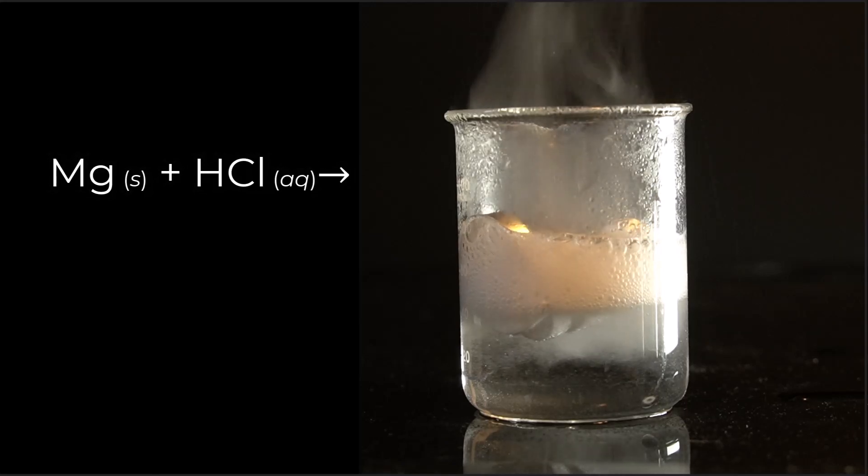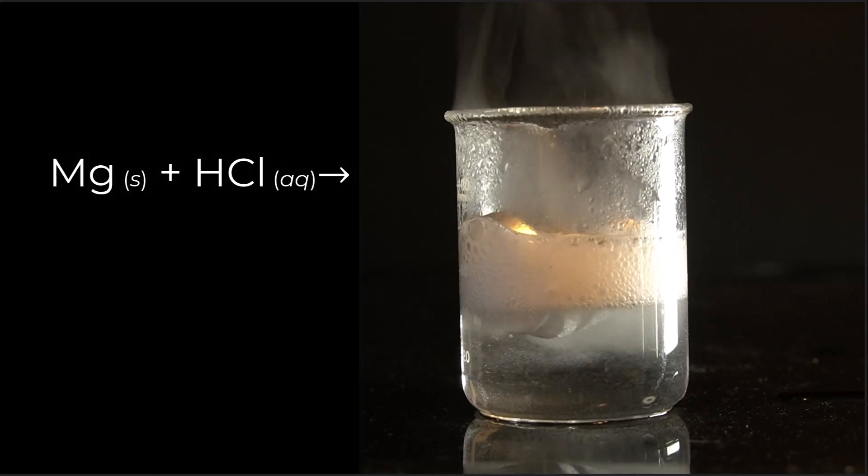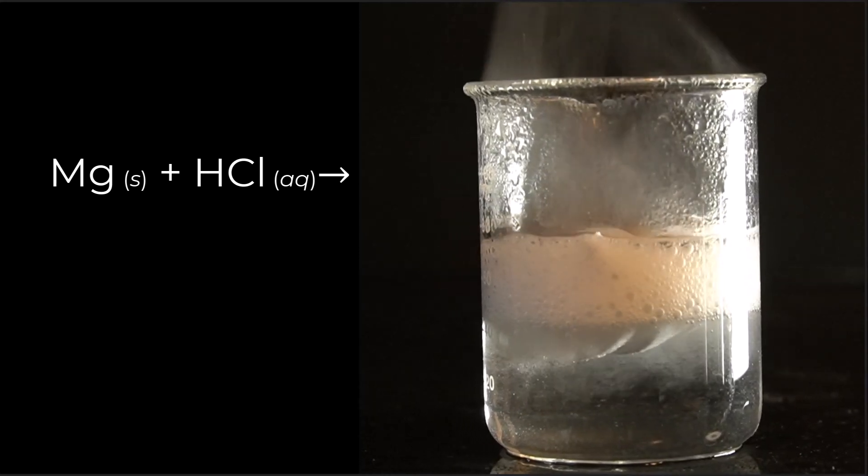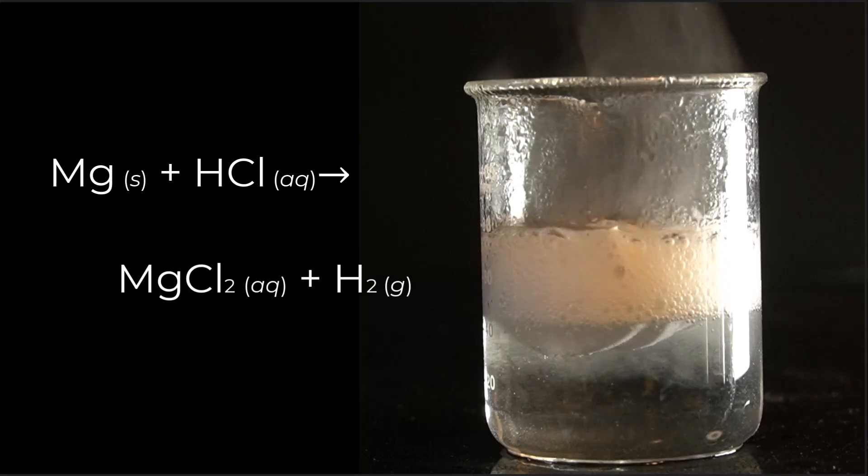What's going on is that magnesium ribbon, that solid, is reacting with the aqueous hydrochloric acid. It's producing magnesium chloride, MgCl2, and that's aqueous, so it stays dissolved.